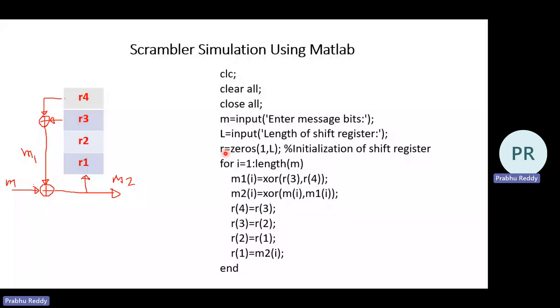R is equal to zeros of 1, L. This implies all the four shift registers are assigned with initially zero value. And right now this for loop, what exactly it will do? It will perform the XOR operation. That XOR operations can be done as per this diagram. Initially, there will be an XOR between R4 and R3 and which will result it into M1. So M1 of I is equal to XOR between R3, R4. Next, M2 of I is an XOR between M1 of I and M of I.